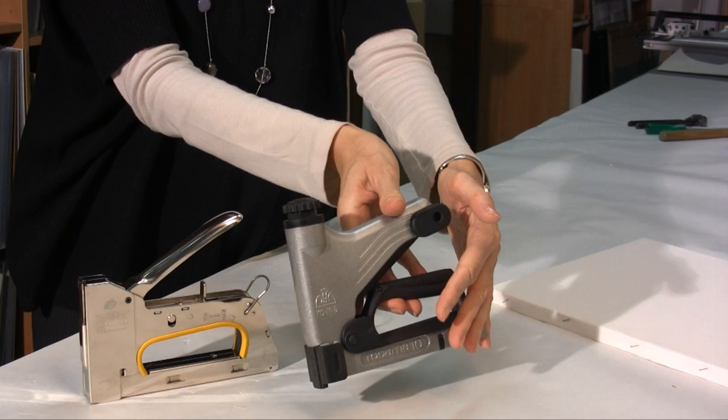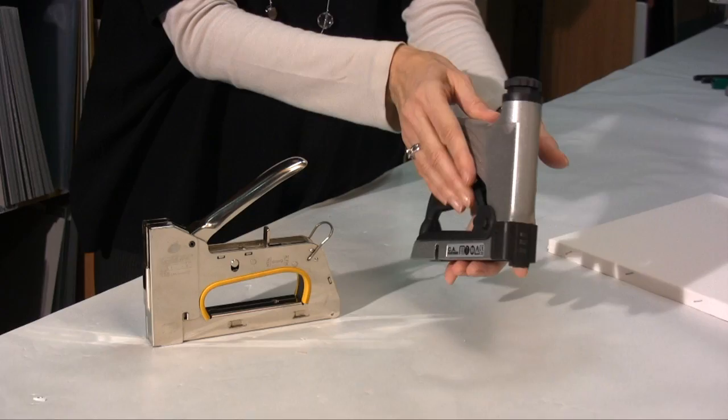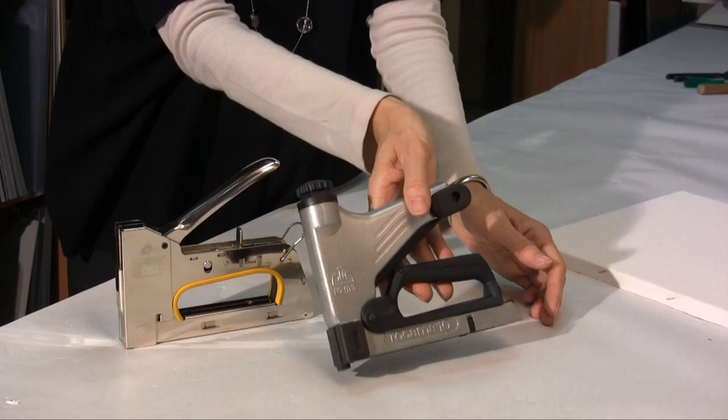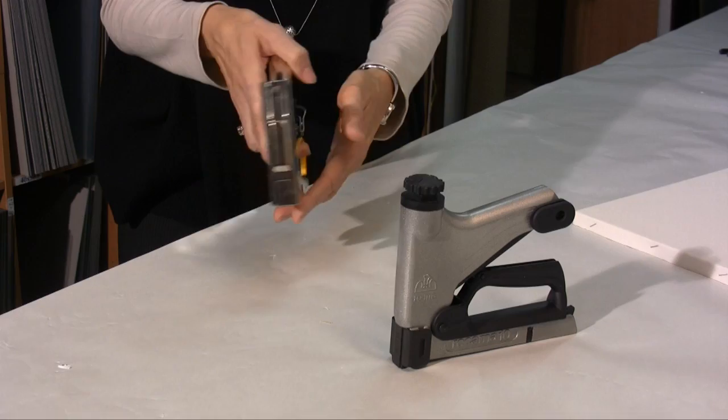The differences between the two tackers are these. Rokama requires less effort than Rapid, but to compensate the staple comes out with less power. Rokama has an appendix of approximately 5mm, which allows one to identify better the exact position in which to apply the staple. Rapid instead doesn't have an appendix.